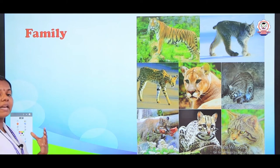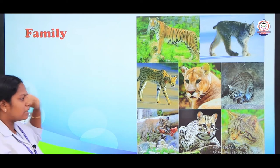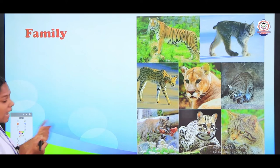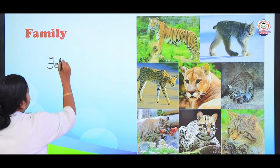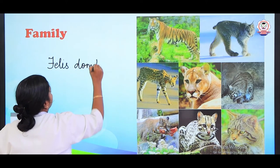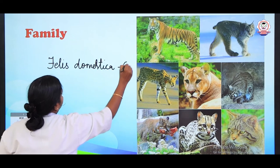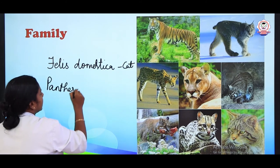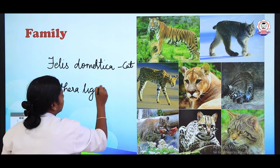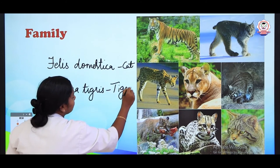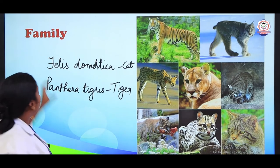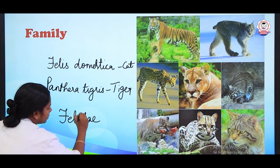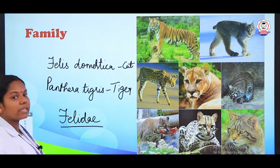The next higher level of genus is a family. For example, the scientific name of cat is Felis domestica, and tiger is Panthera tigris. They both are classified under the same family — Felidae. So several genus join together to form a family. Tiger also belongs to the cat family Felidae.